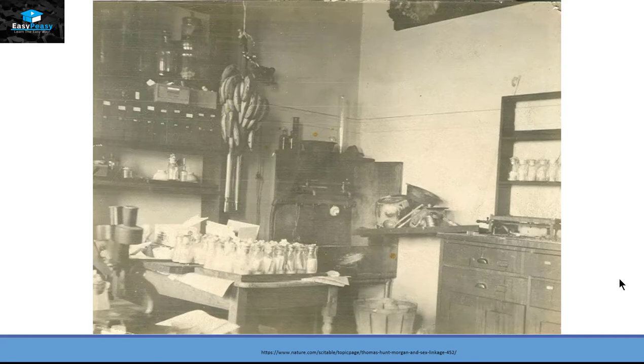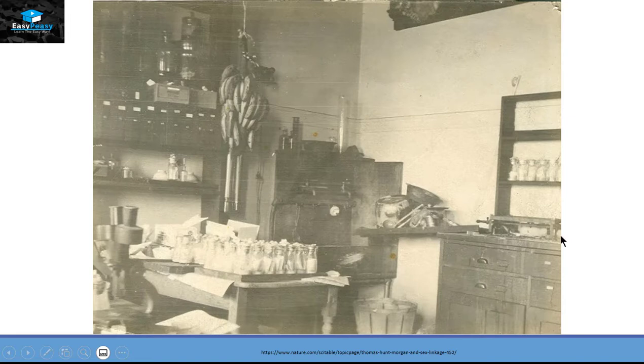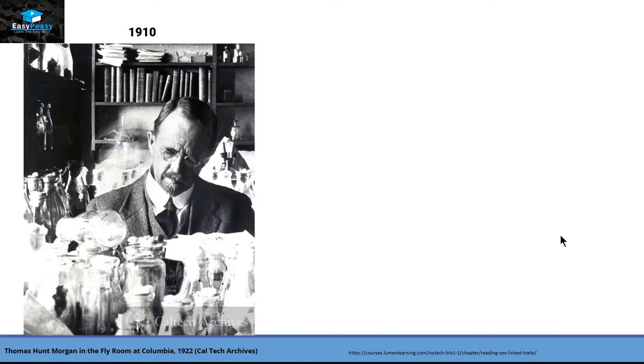This is the real picture of Thomas Hunt Morgan's laboratory. As you can see, there are a lot of conical flasks present here in which he was culturing Drosophila melanogaster.